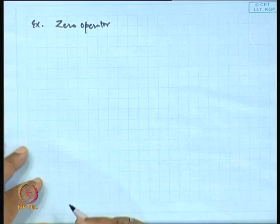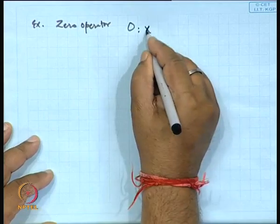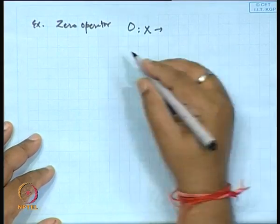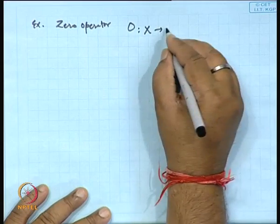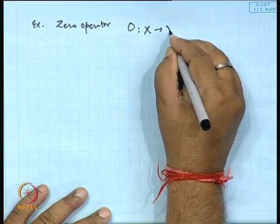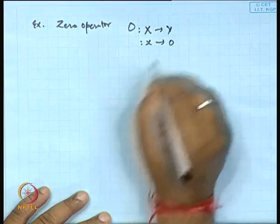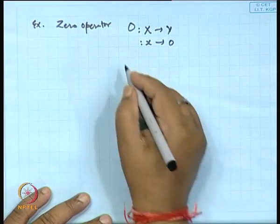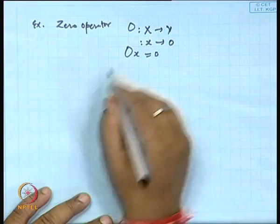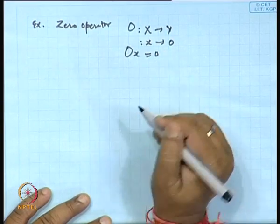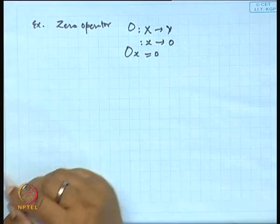Another operator which is also linear is the zero operator. This maps every element of X to the zero element — the zero operator from X to Y such that the image of x comes out to be the singleton set {0}. This is a linear operator.